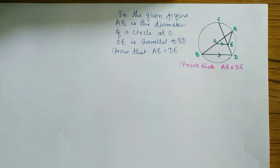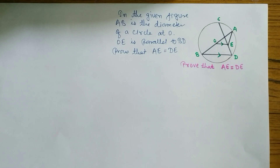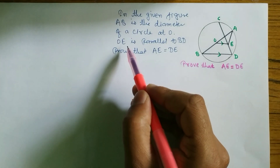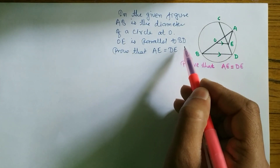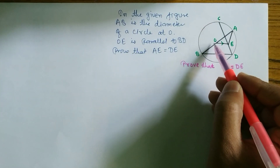We have a question I took from the question bank. So look at the question. In the given figure, AB is the diameter, passing from origin O, and OE is parallel to BD.